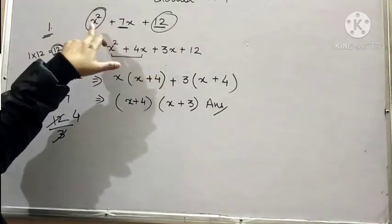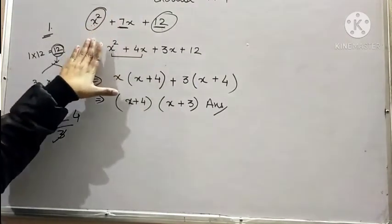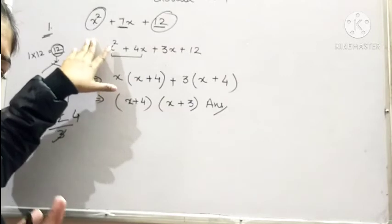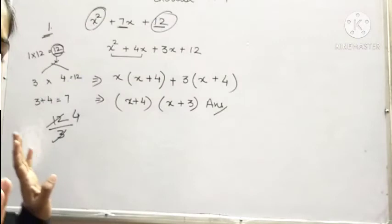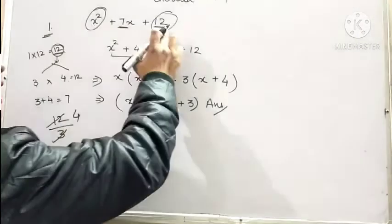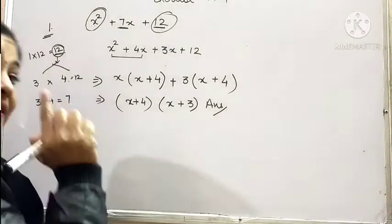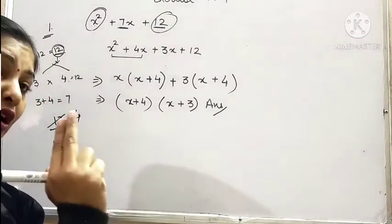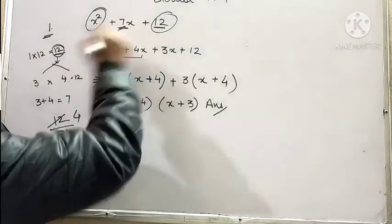First of all, what we do? We find the product of extremes, which is 12x square. But we need not to consider the variable term. We only consider the numerical coefficient, that is 12. Now we need to factorize 12 in a manner such that the product of the factors is 12 and sum of the factors is 7, the middle term.